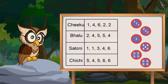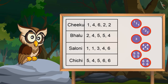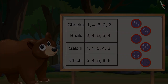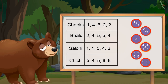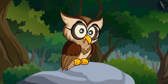Now, tell me — which number came for the highest times and which one for the least? Four came for the highest times, that is, five times, and three came for the least, only once.